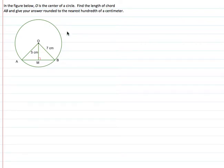So the first thing we need to take notice is that triangle OMB we know is a right triangle. So we're probably going to be using the Pythagorean theorem.